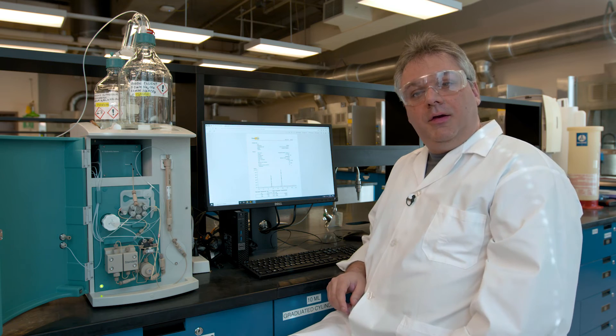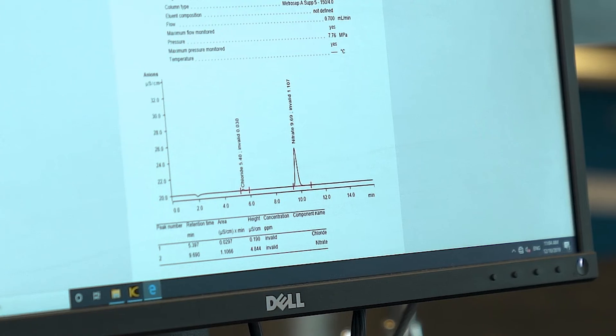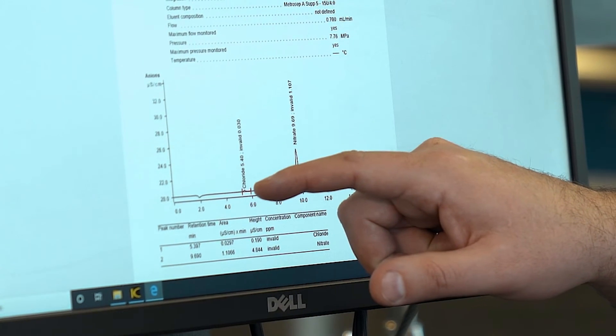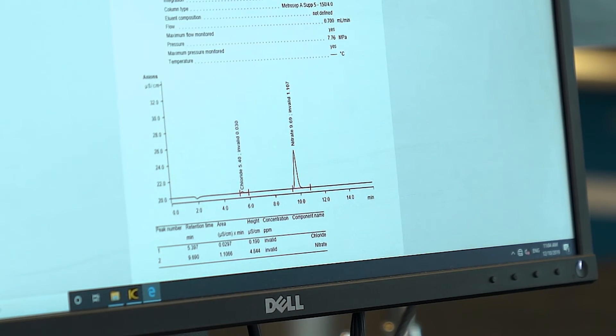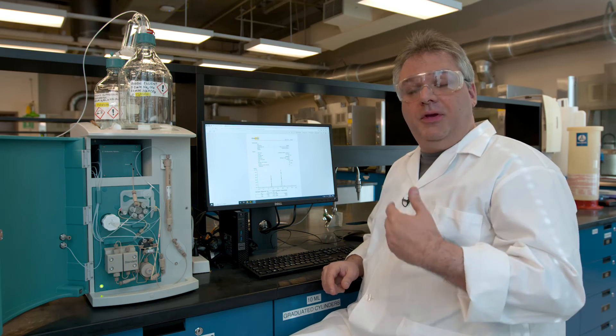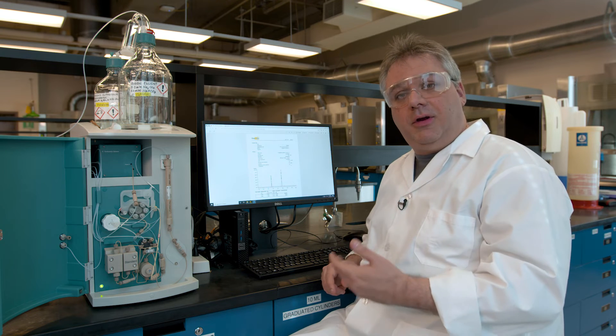All right, we're all done. So let's see what the results tell us. Along here is our chromatograph. Each peak along here represents a different ion. Depending on the sample, those could be fluoride, chloride, nitrate, or sulfate. The size of the peak indicates how much of the ion is present in our sample.